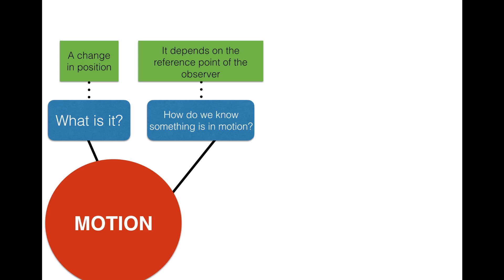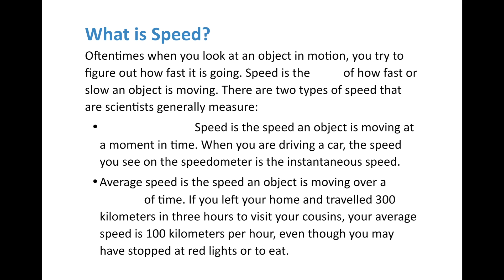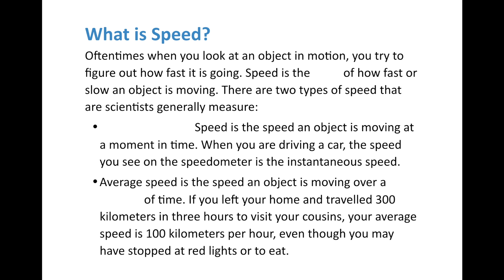Let's add this concept to our graphic organizer. How do we know if something's in motion? Motion completely depends on the reference point of the observer. Now let's talk about how we define how fast something is moving. When you look at an object in motion and try to figure out how fast it's going, that's what we call speed. Speed is the rate of how fast or slow an object is moving.